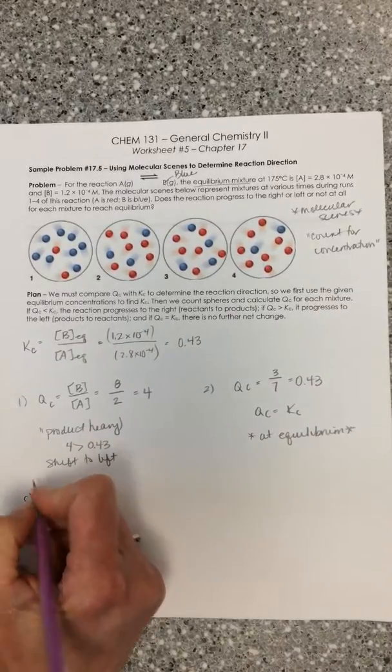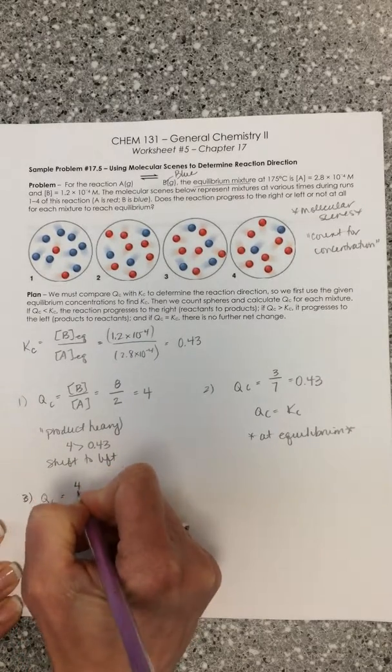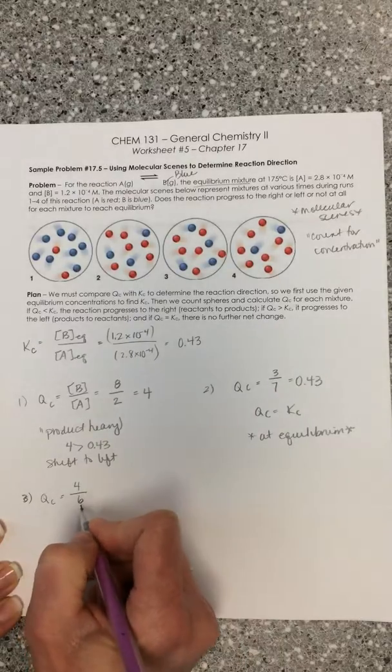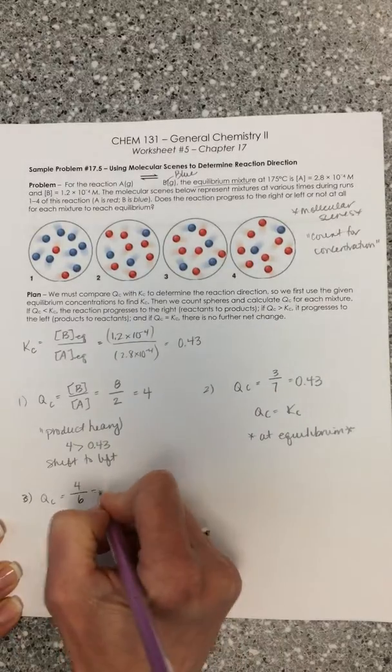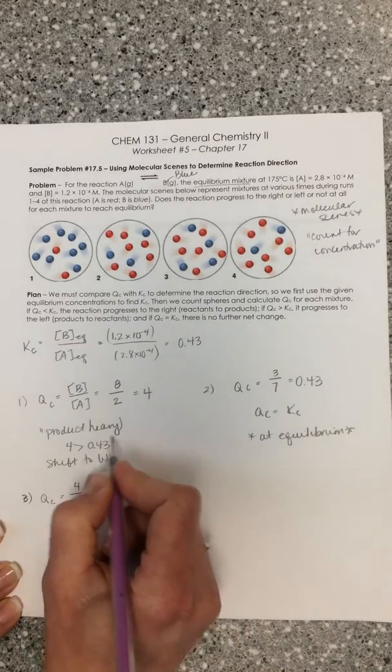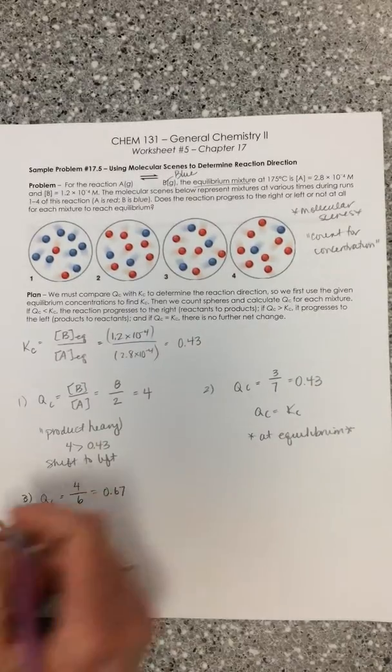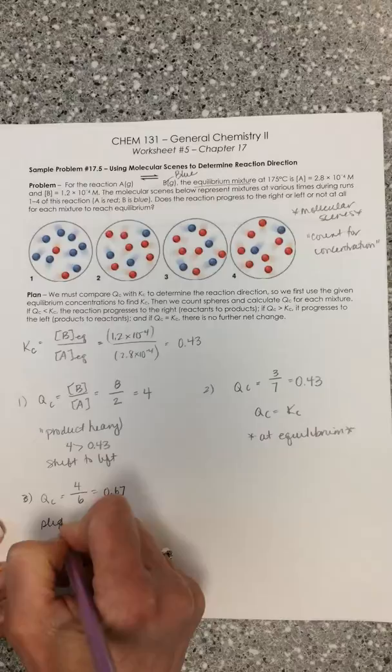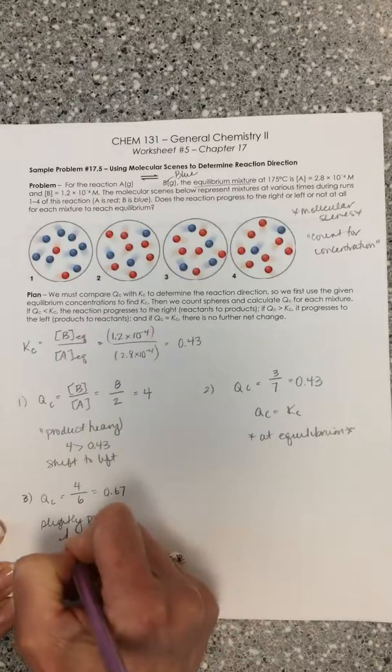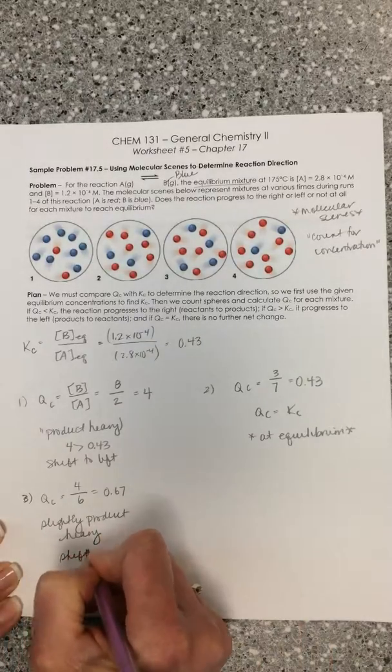Molecular scene three. QC equals four over six. Four blue spheres over six red spheres. That's equal to 0.67. 0.67 being slightly greater than the 0.43 we have for KC tells us that we're slightly product heavy. But nonetheless, we will shift left.